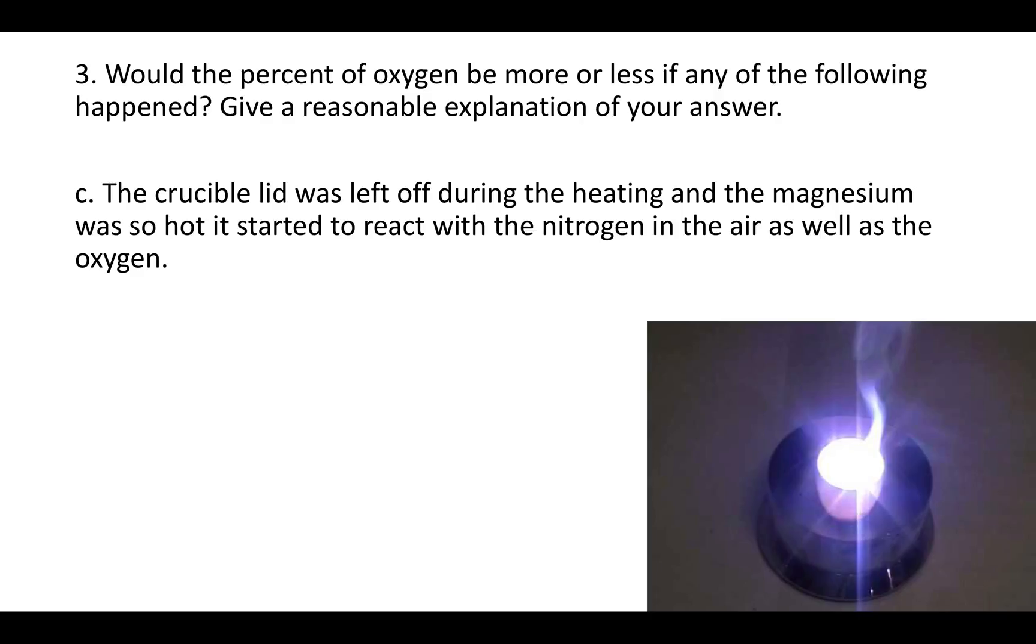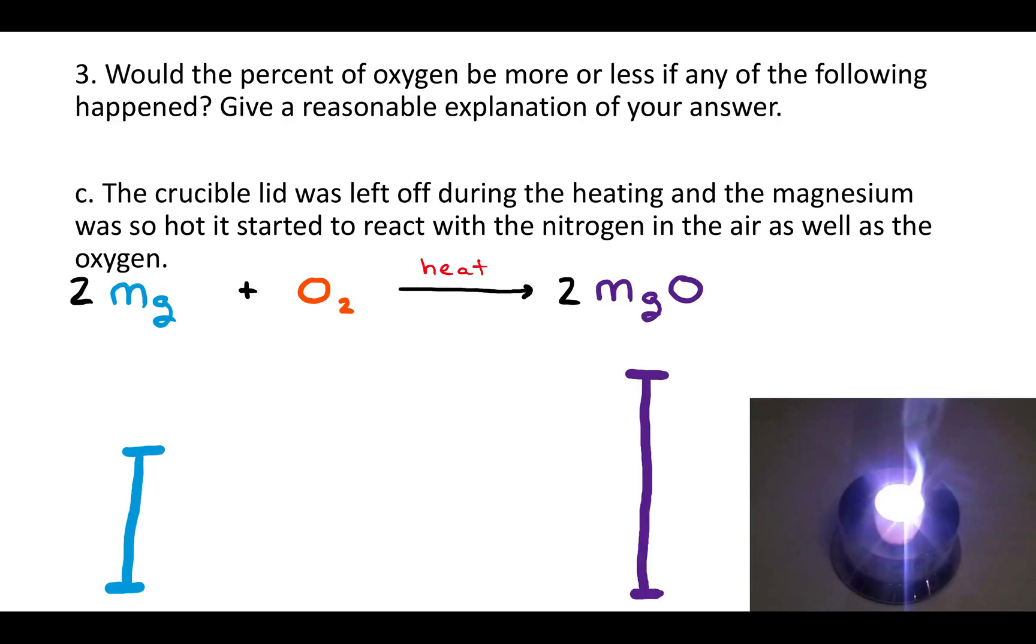For C, C says the crucible lid was left off during the heating and the magnesium was so hot it started to react with the nitrogen in the air as well as the oxygen. Recall that air is around 79% nitrogen and around 19% oxygen. So it's really mostly nitrogen. But the nitrogen is really stable. So the magnesium will sooner react with oxygen than the nitrogen. But if you get the magnesium hot enough, it will react with the nitrogen. So let's say you have this scenario, and if the magnesium is reacting with the nitrogen, then it won't be able to react with the oxygen.